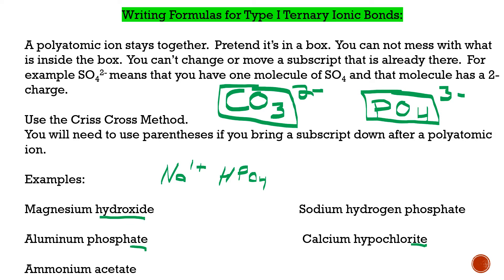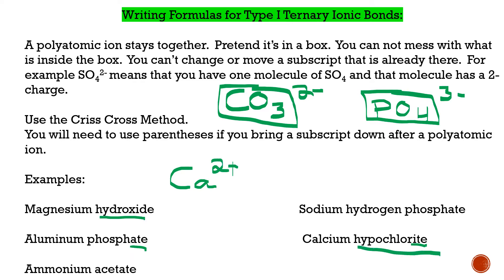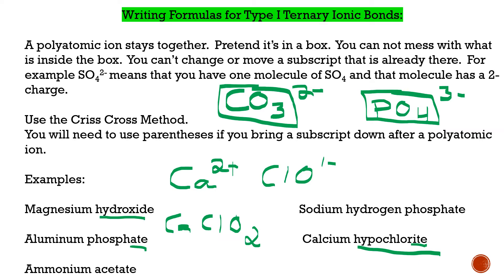Last example: calcium hypochlorite. The 'hypo' prefix doesn't relate to hydrogen — again, anything after the metal is the polyatomic. Calcium is our metal. Hypochlorite is ClO with a 1− charge. Calcium has a 2+ charge, so we crisscross: ClO gets the 2. But I need to put parentheses here because I'm bringing that 2 down after the entire ClO, not just O. So our formula is Ca(ClO)2. Those parentheses are a killer, so make sure you use them.